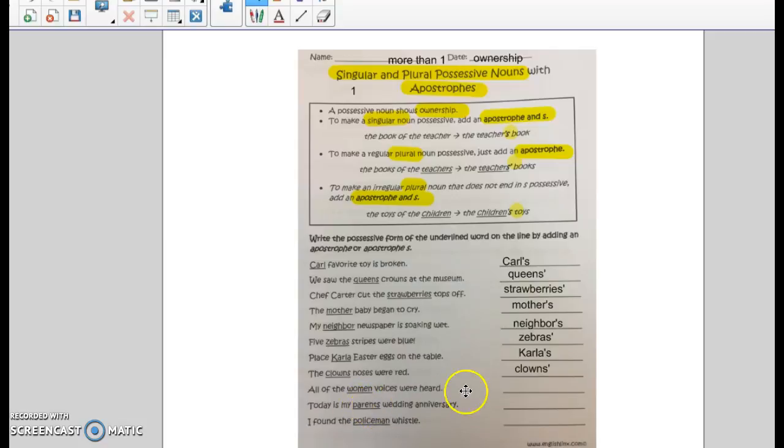All of the women voices were heard. Well, women is an irregular plural because it's already plural. So we just put women apostrophe S. There it is. Still women. Today is my parents' wedding anniversary. It's more than one parent that we are talking about. So we put the S on the end. It's parents apostrophe. Still more than one parent.